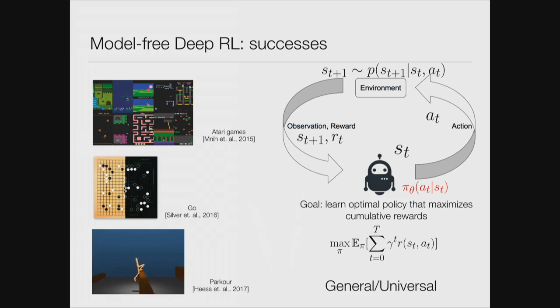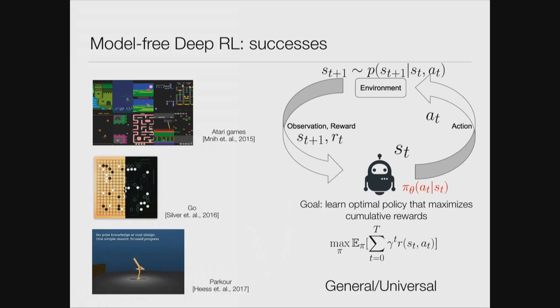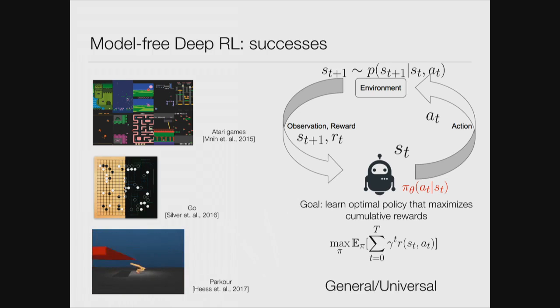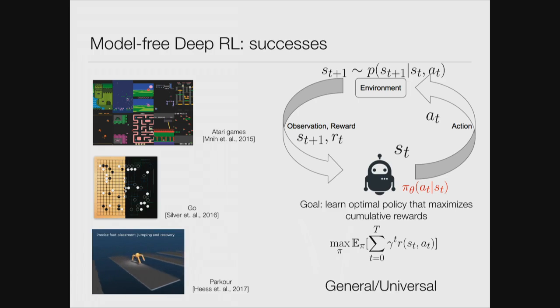The nice thing about model-free methods is that they're very general and universal. Model-based methods learn the dynamics of the environment and then use that model to roll out and do optimization — basically backpropagation to optimize for the policy. Model-free methods don't learn this dynamic information and just directly try to maximize the reward, assuming you can only sample from the dynamics. There's been a lot of success, but also a lot of limitations.